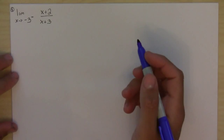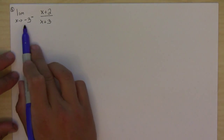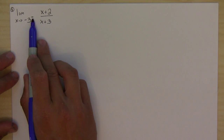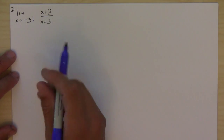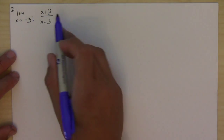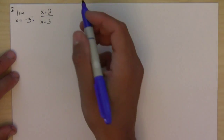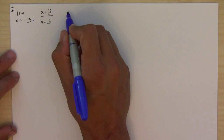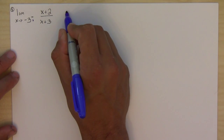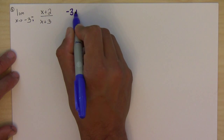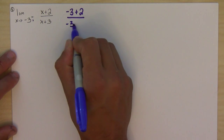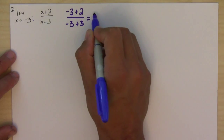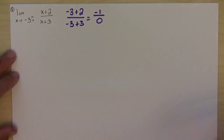In this problem we're trying to figure out the limit as x goes to negative 3 from the left side. The very first thing we try to do is to plug in the number. Notice that when we do that, we would get negative 3 plus 2 over negative 3 plus 3, which is negative 1 over 0.